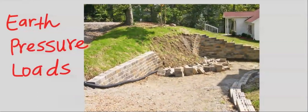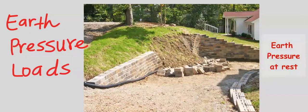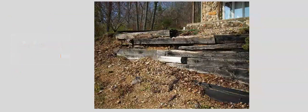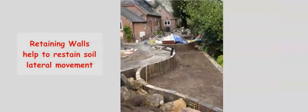Earth pressure loads. This is pressure of the soil, called earth pressure at rest. Soil has self-weight and has the tendency to move laterally, at times caused by moisture saturation. Retaining walls are constructed to restrict soil movement.